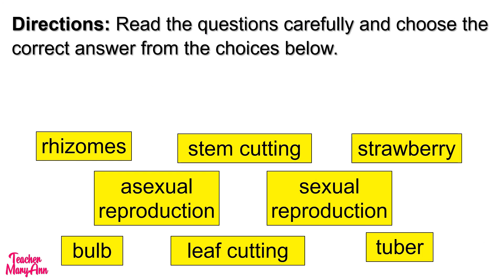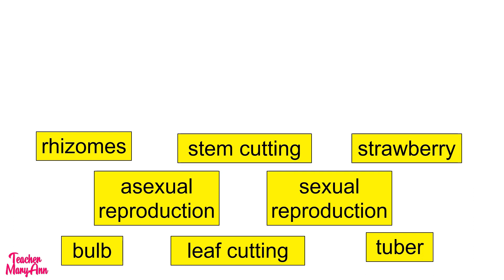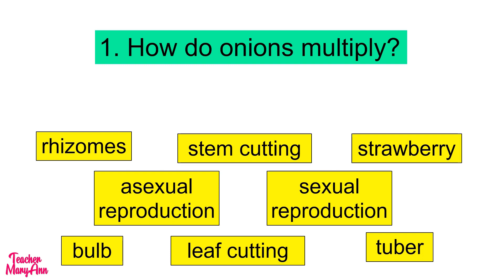Let's begin with this activity. Read the questions carefully and choose the correct answer from the choices below. First question: How do onions multiply? Onions multiply through bulb.